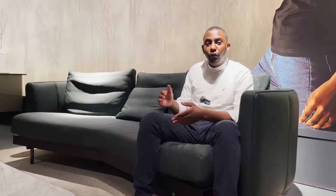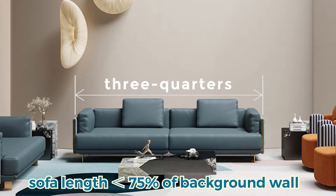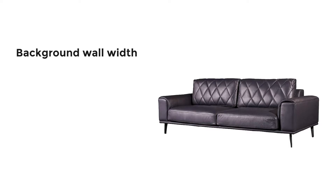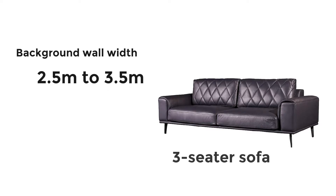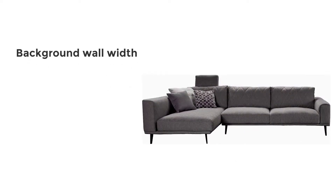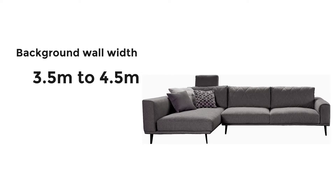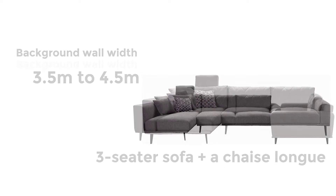When choosing the sofa for your apartment, it is very good to consider that the length of your sofa should be no more than 70% of your background wall. For example, if the width of the background wall is 2.5 to 3.5 meters, it is recommended to buy a three-seater sofa. If the width is 3.5 to 4.5 meters, a three-seater sofa plus a chaise lounge.